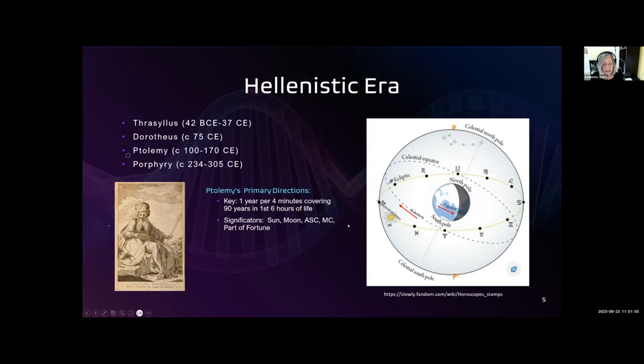Some key terminology to know for the primary directions are that the planets and the points fixed natally on the celestial sphere are called the significators. They signify events and characteristics of the person. The natal chart contains the promise of things that will affect the native during his life. The moving planets are called promisors or promeitors. When they contact sensitive points in the fixed natal sphere, the promised events may take place as shown by the primary direction timing.